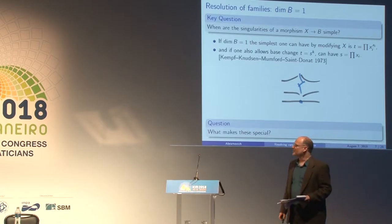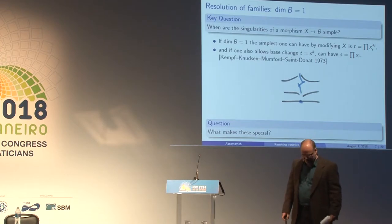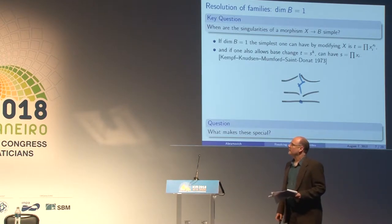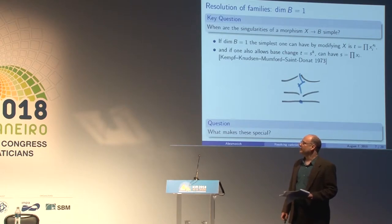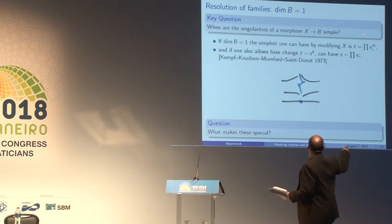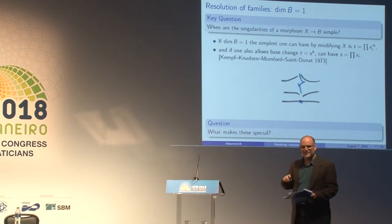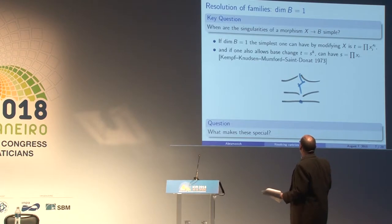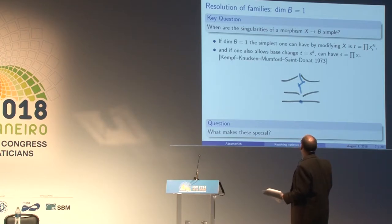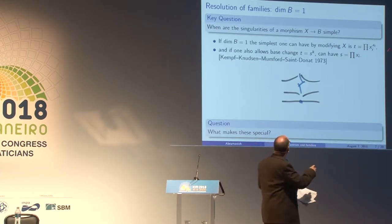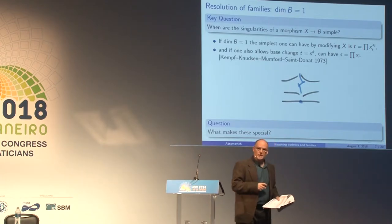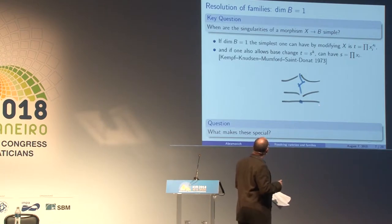In the case where the dimension of the base is one, there's a very complete answer. The simplest one can have by just modifying X is monomial equations for the fibers — this is an outcome of Hironaka's theorem. And if one also allows base change, there's a fairly subtle result of Kempf, Knudsen, Mumford and Sandona from 1973, which says we can improve on that by removing multiplicities and keeping the total space non-singular. That's what they call a semi-stable one-parameter family.